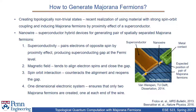The externally applied magnetic field tends to align electron spins and close the gap. Strong spin-orbit interaction in the nanowire tends to reopen the gap. Thus, topologically non-trivial states — which are Majorana fermions in this case — are created. The one-dimensional system ensures that only two Majorana fermions are created.